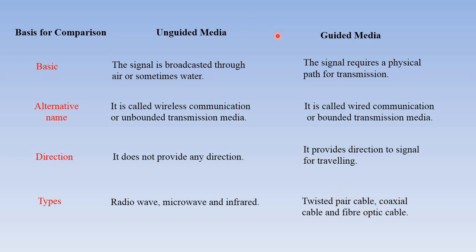These are the differences between guided and unguided media. If we are using wires, that type of medium is called guided media. If we are using wireless connections where signals transmit through air or water, that is unguided media. Types of unguided media include radio waves, microwave, satellite, and infrared. Guided media types include twisted pair cable, coaxial cable, and fiber optic cable.